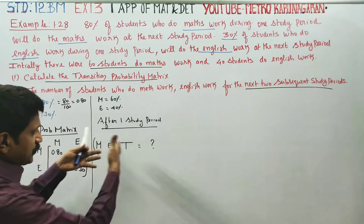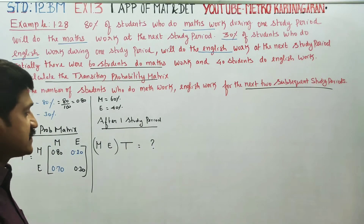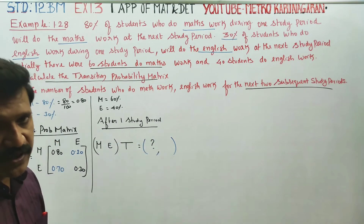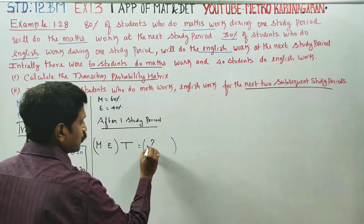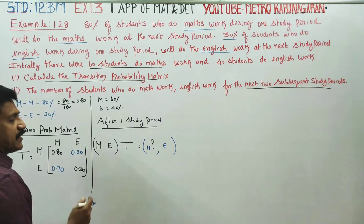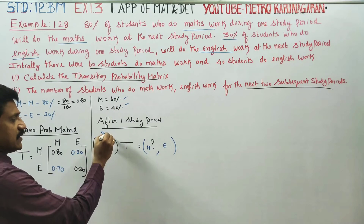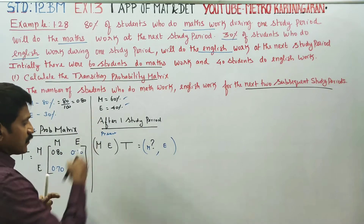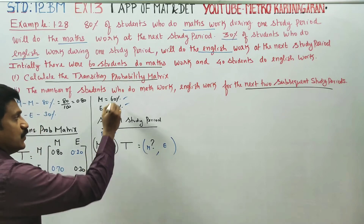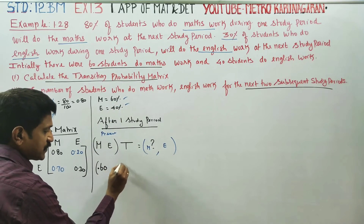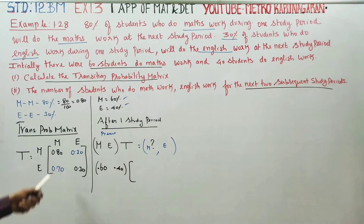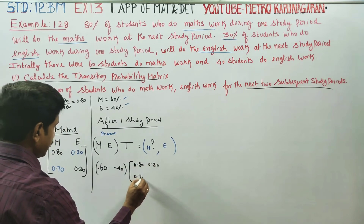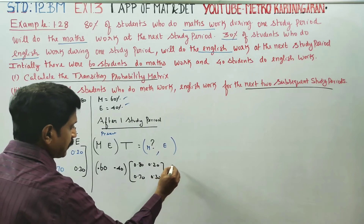Using the transition matrix, we calculate after one study period. The present state vector is Maths 0.60, English 0.40, multiplied by the transition matrix: 0.80, 0.20, 0.70, 0.30.